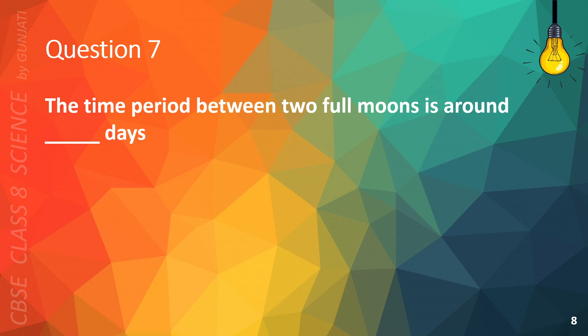Question 7. The time period between two full moons is around blank days. A. 10, B. 20, C. 30, or D. 40. The correct answer is C. 30.